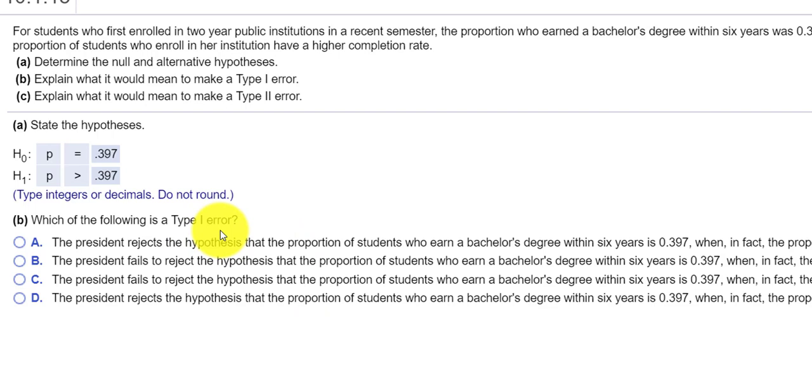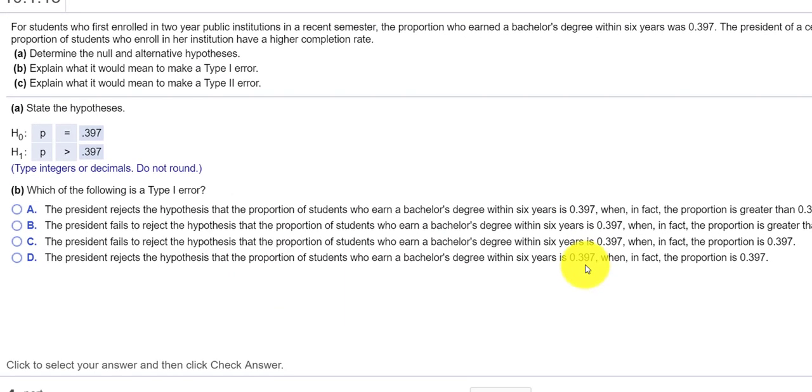So a type 1 error would be where we reject the hypothesis even though we really shouldn't. We make the mistake of rejecting the hypothesis that the proportion of students who earn a bachelor's degree within six years is 0.397. So if we reject that, when in fact this really is the correct proportion, the correct proportion is 0.397. Accepting this would be saying that we believe the proportion is 0.397.